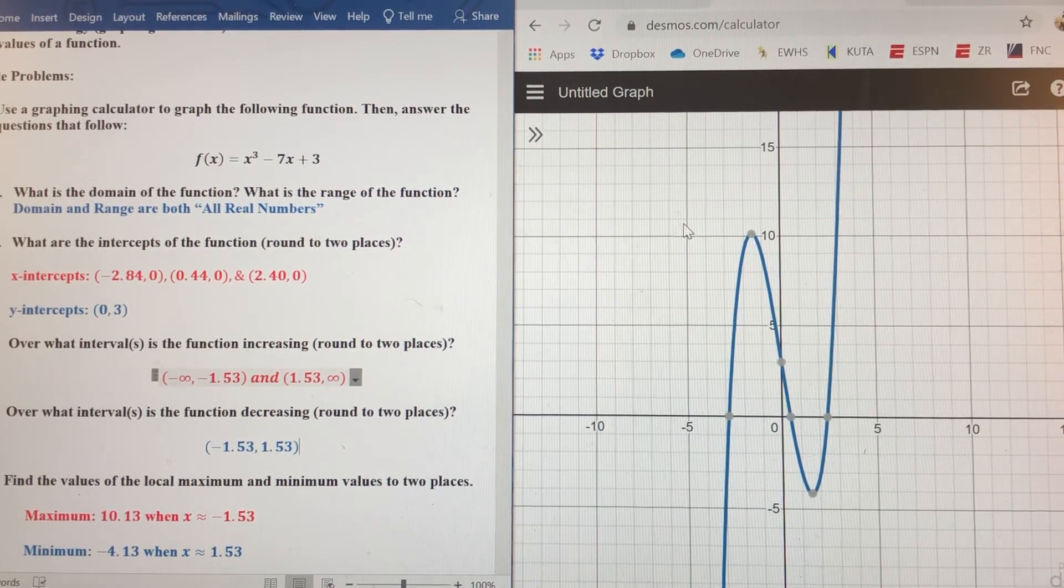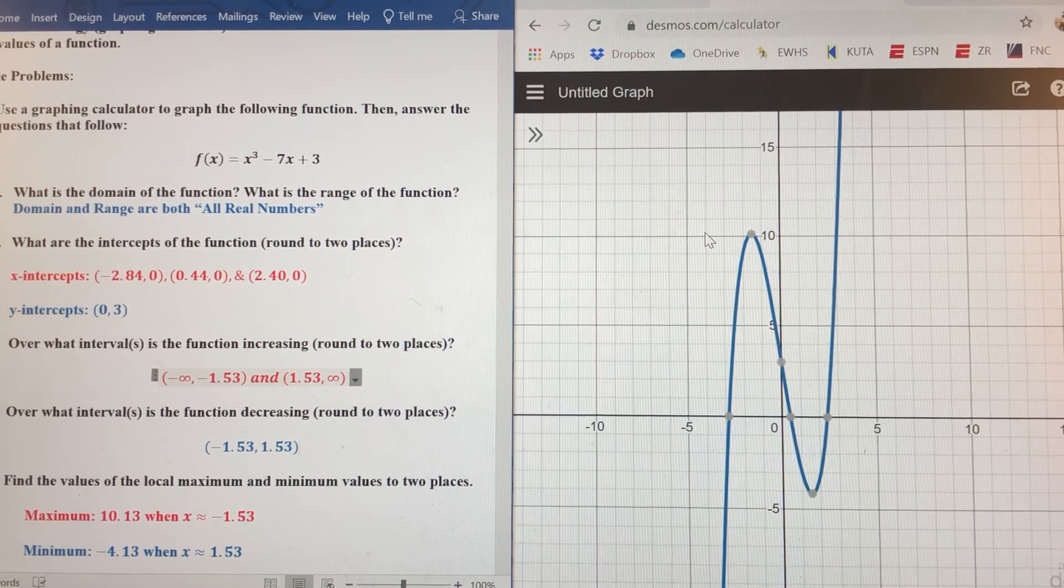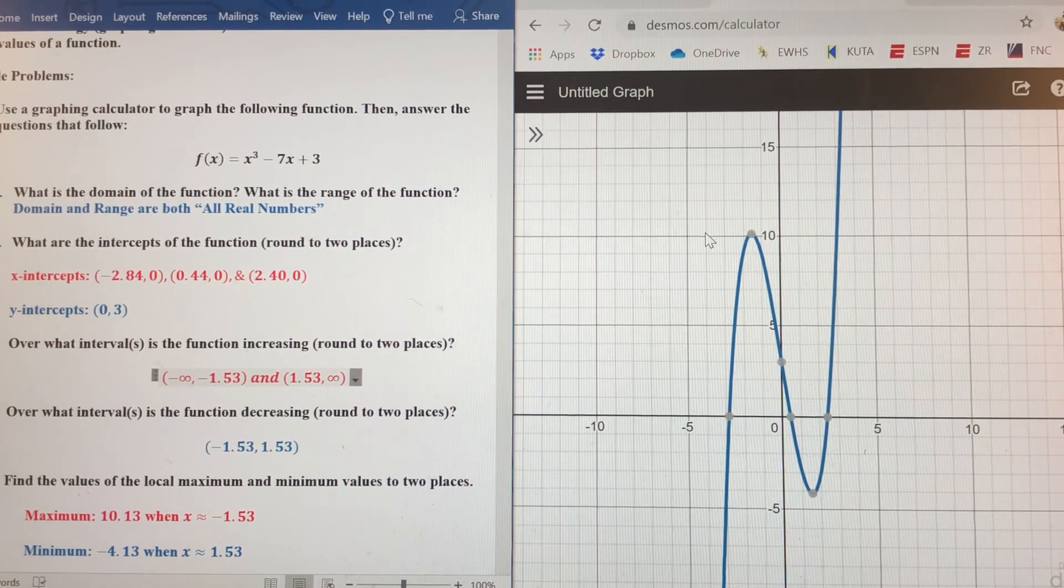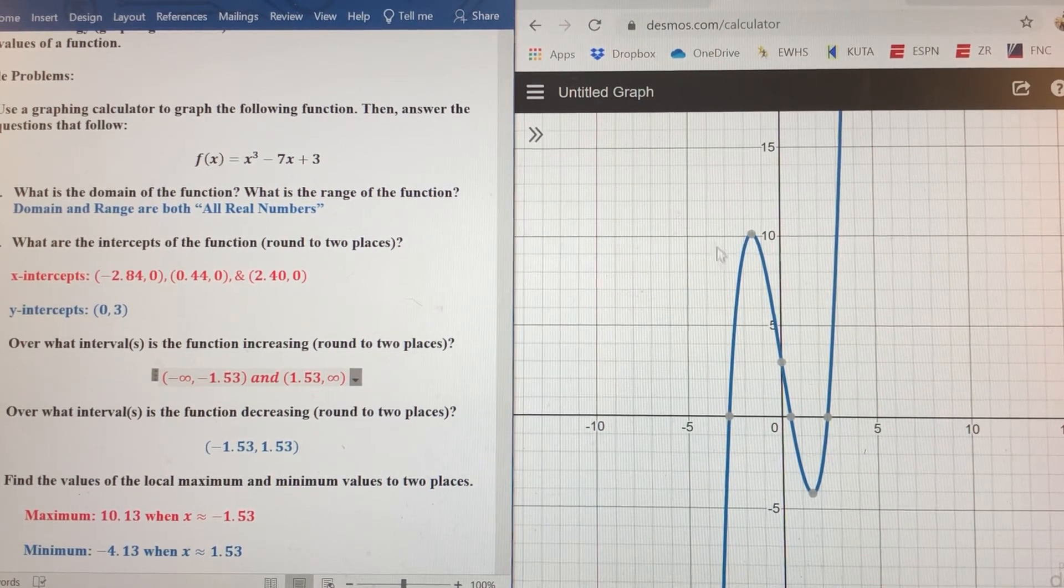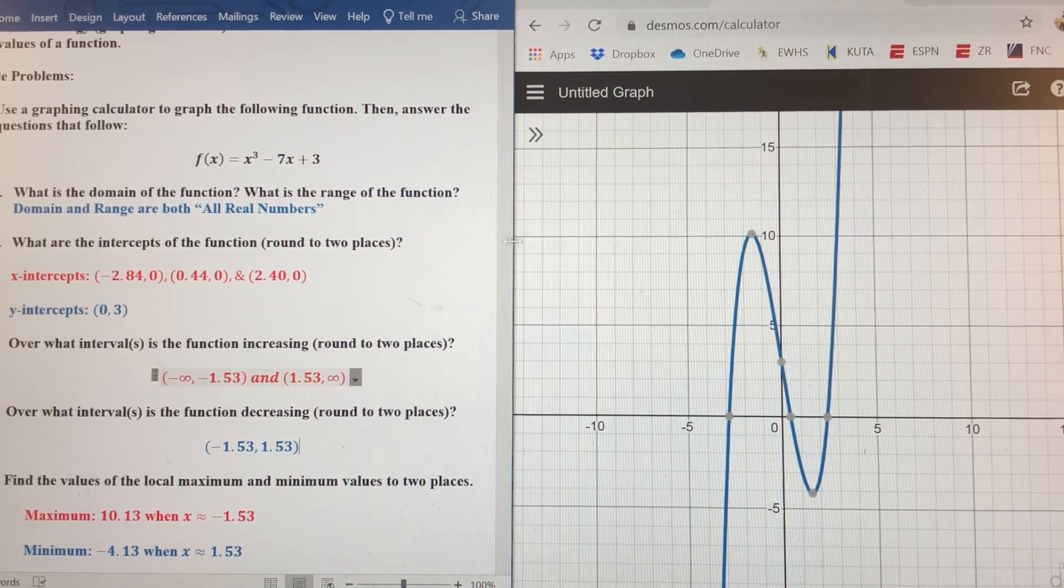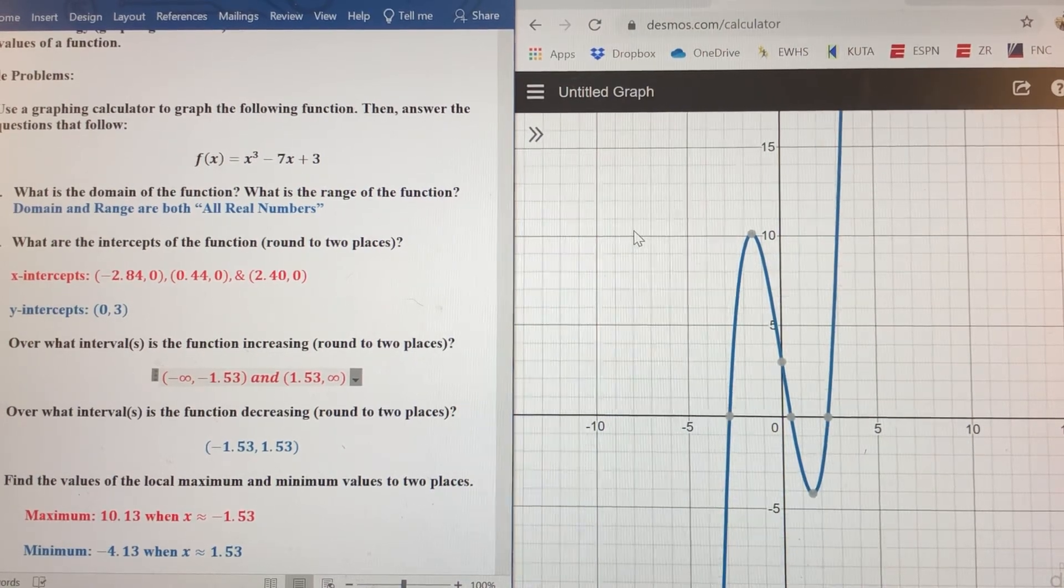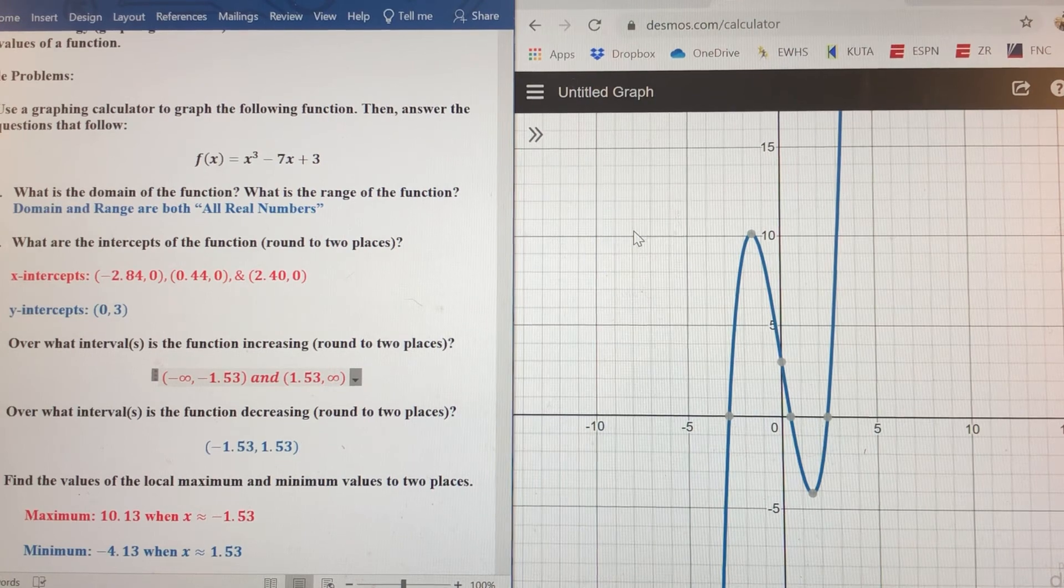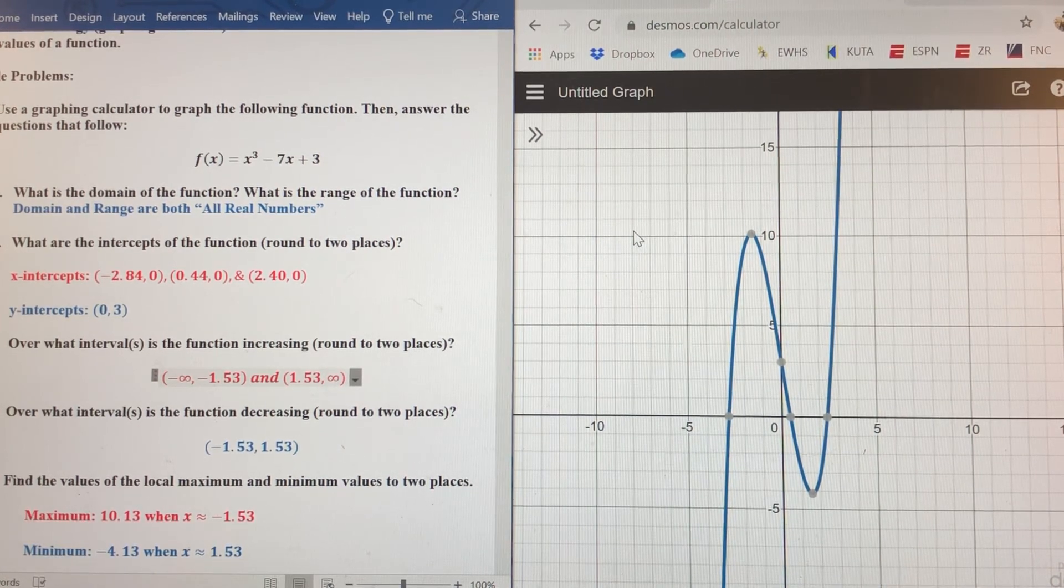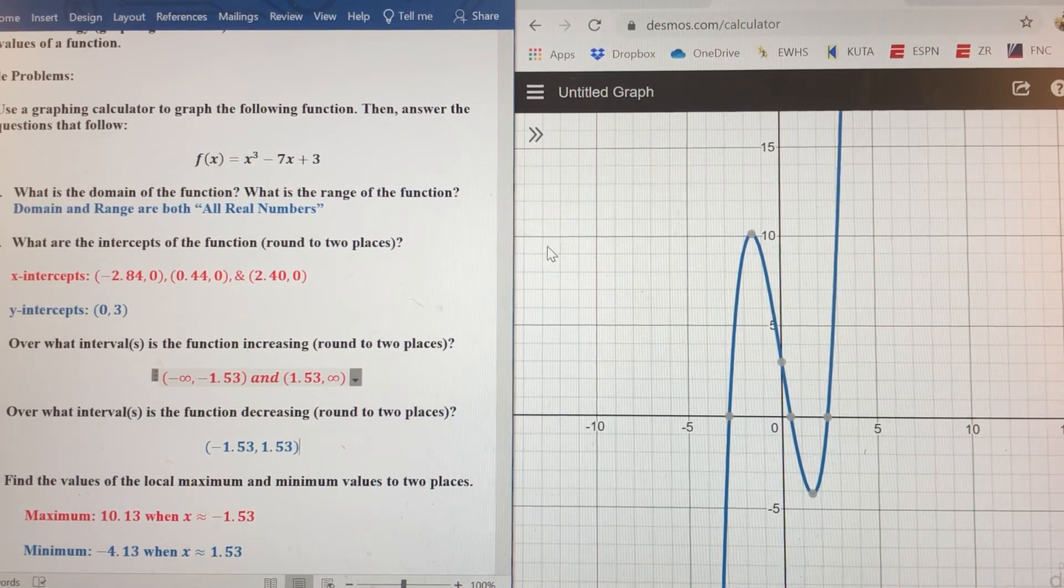So again, Desmos, great online calculator. It's going to show you a lot of these key points very, very simply, very easily. When you get into AP Calc, there are some other key points here that you're not going to see on Desmos. And we're going to have to be able to find those another way. But for now, online use Desmos. I'll show you the Texas Instruments process and steps in class. But that's how you can use technology to make finding increasing, decreasing intervals and max and min values a lot more easily.